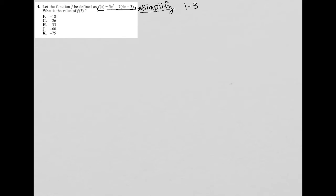So the question says, let the function f be defined as, and I'm going to just write that down because I always write down equations that are provided to me. So f(x) = 5x² - 7(4x + 3).